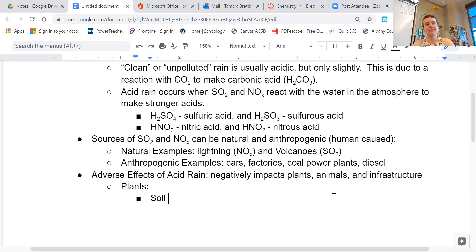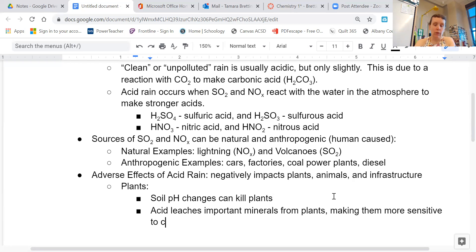Soil pH changes with acid rain. Soil pH changes can kill plants, especially plants that have a small root system. If the soil pH changes, the plant can just kick the bucket. Acid leeches important minerals from plants, making them more sensitive to cold weather. Leeches means sucks out. Like, think about a leech. Leech sucks an animal's blood. So leeches is a verb to mean remove, pulls out. So acid will pull minerals out of a plant. And then that plant, because it doesn't have the minerals that it needs to have a healthy system, will be more sensitive to cold water and more likely to not survive winter weather.